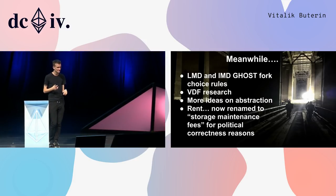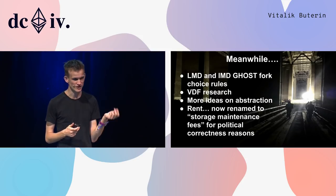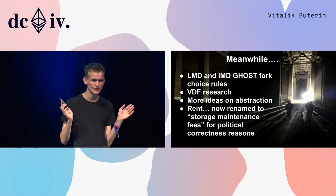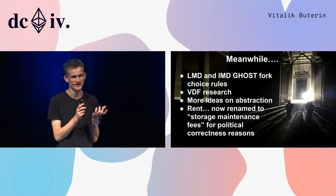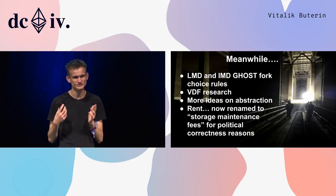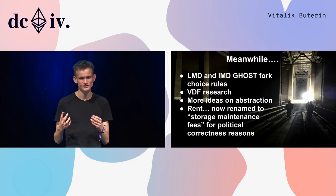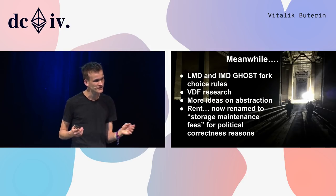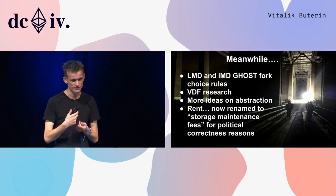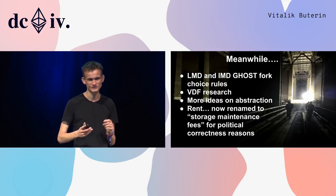In the meantime, we spent a lot of time on fork choice rules, getting closer to realizing that fork choice rules based on GHOST — the Greedy Heaviest Observed Subtree algorithm, originally for proof of work but repurposed for proof of stake — made a huge amount of sense. Justin started doing research on verifiable delay functions; we had a workshop at Stanford, made a lot of progress there, and Justin is still collaborating with researchers from that workshop.